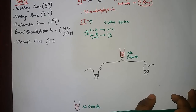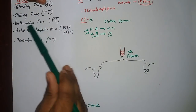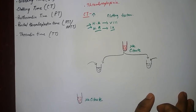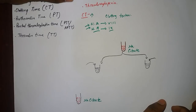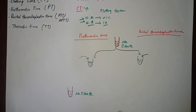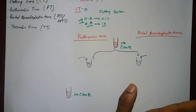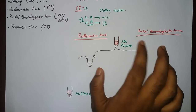We can further divide the clotting time into prothrombin time and partial thromboplastin time, because we don't know which factors are deficient that are causing the increased clotting time. So in this case there are two tests: prothrombin time and partial thromboplastin time.